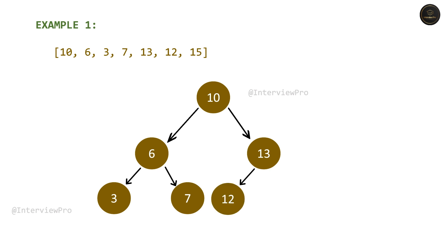Then we have 15. We have already finished root, which is 13, and left, which is 12. Now we have to put 15 to the right. Does 15 go to the right? Yes, because it's greater than 13 and also greater than 10. So we have 15 to the right. This is a correct pre-order sequence of the binary search tree.